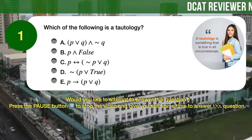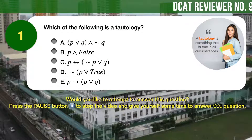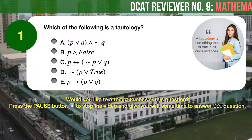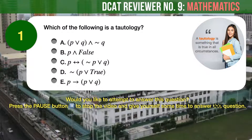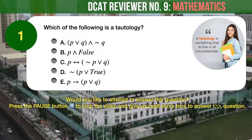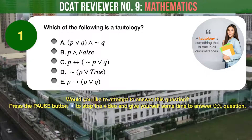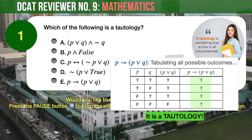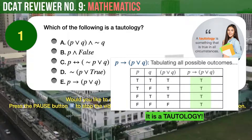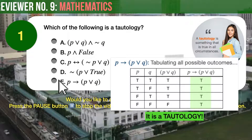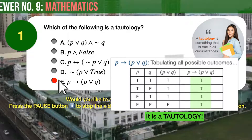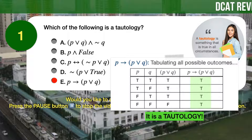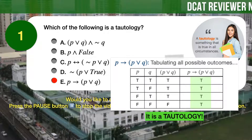Now we are left with answer choice E. But is it in fact a tautology? We need to inspect and tabulate all its possible outcomes to establish if E is indeed a tautology. We already tabulated the outcomes for you. As you can see, all the possible outcomes are true. It is therefore a tautology, and the correct answer we are looking for.